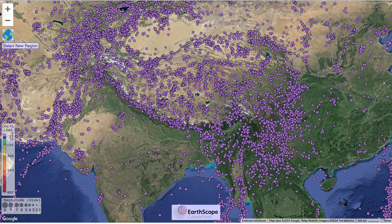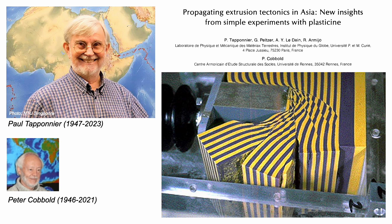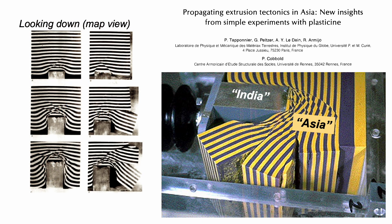Paul Tapponnier wanted to find out, and called up the services of Peter Kobold at the University of Rennes. He was an expert in what geologists call analogue modelling — the idea is to mimic features found at a large scale in rocks, or even large parts of the crust, not by experimenting with rocks but with more everyday materials. In this case, plasticine. The rigid Indian crust is represented by a steel ramrod, and the weak Asian crust by plasticine with stripes to see what's happening.